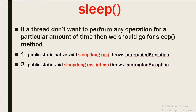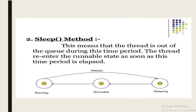The third one is the sleep method. If a thread doesn't want to perform an operation for a particular amount of time, we should use the sleep method. The signatures are: public static native void sleep(long ms) and public static void sleep(long ms, int nanoseconds). Both throw InterruptedException, which is a checked exception, so we must handle it. During the sleep period, the thread is out of the queue, and it re-enters the runnable state as soon as the time period elapses.